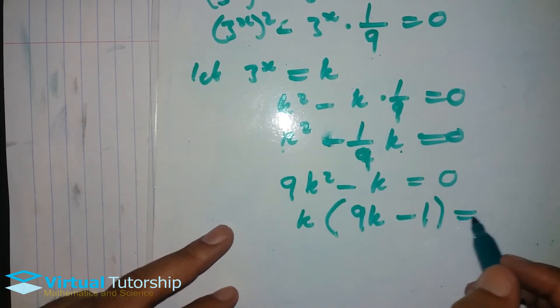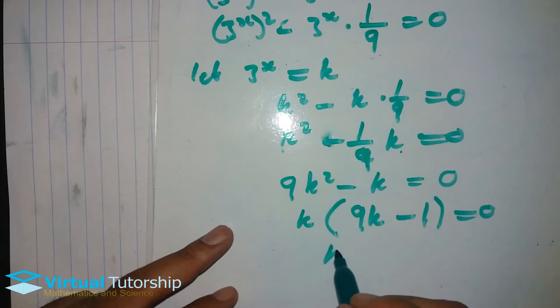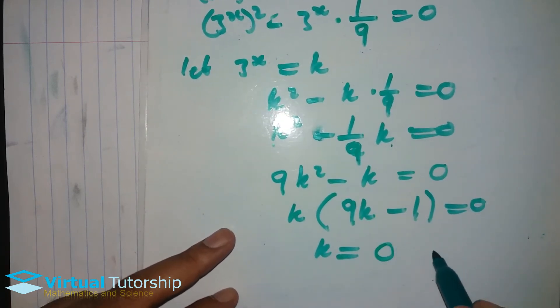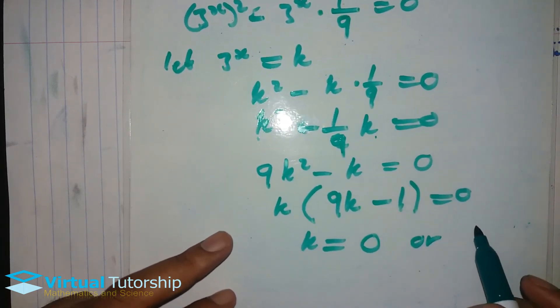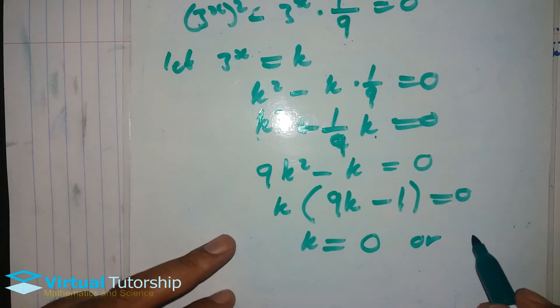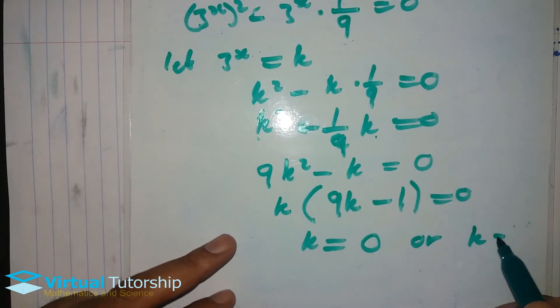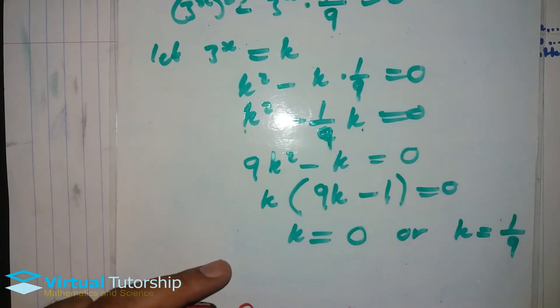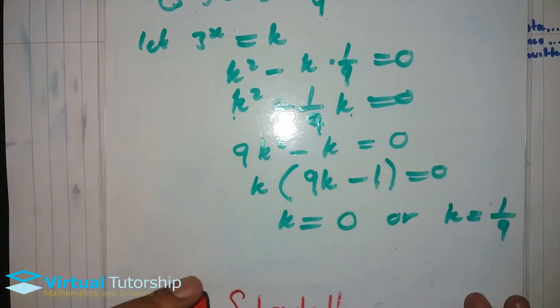Right, we keep the common factor. Now having a quadratic equation without the C value — keep common factor, which is k: k times (9k minus 1) equals zero. So k equals 0, or k equals positive 1 over 9.